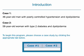Case one focuses on the calculation of CHD risk in a 46-year-old man with poorly controlled hypertension and dyslipidemia, and the reduction of this risk by using therapeutic lifestyle changes and evidence-based pharmacotherapy. Case two focuses on the assessment of CHD risk in a 58-year-old woman with type 2 diabetes and dyslipidemia, and presents therapeutic approaches for attaining defined lipid goals.